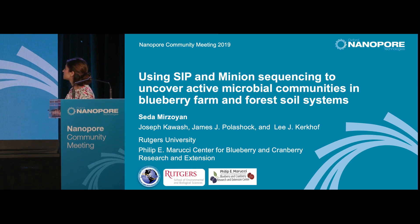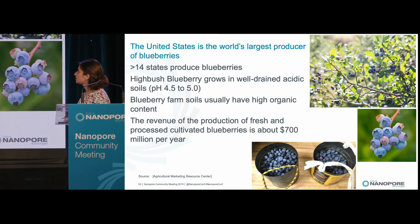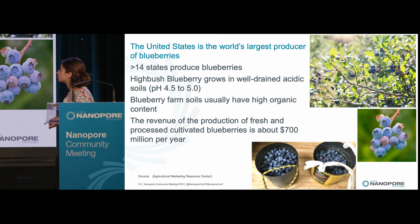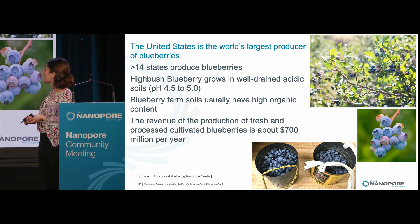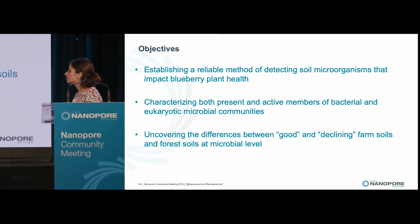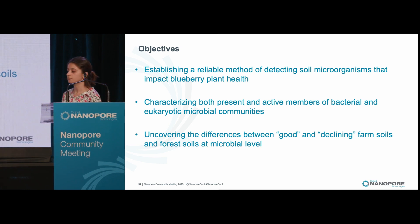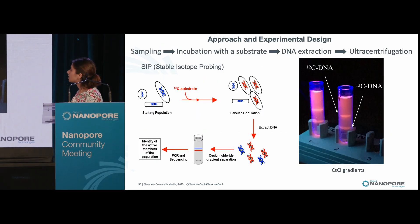We try to characterize active microbial communities by using stable isotope probing and nanopore sequencing in blueberry farm systems. The United States is the world's largest producer of blueberries and the blueberry industry is a $7 billion industry, and blueberry plants grow in acidic soils which have high organic content. The main goal of our research was to uncover the differences between low productivity farm soils and high productivity farm soils by characterizing the active members of both bacterial and eukaryotic microbial communities.